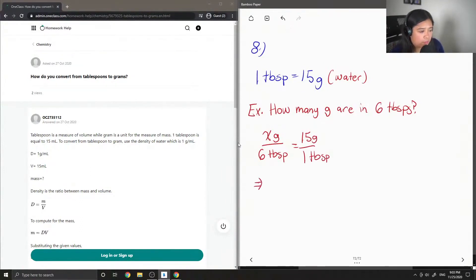So now we just solve for x, so we'll multiply both sides by 6 tablespoons.